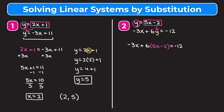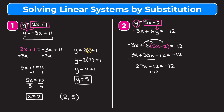We solve for x by distributing the 6: positive 6 times 5x gives positive 30x, and 6 times negative 2 gives negative 12. Combining negative 3x and 30x gives 27x, so 27x minus 12 equals negative 12. Adding 12 to both sides gives 27x equals 0, and dividing by 27 gives x equals 0.